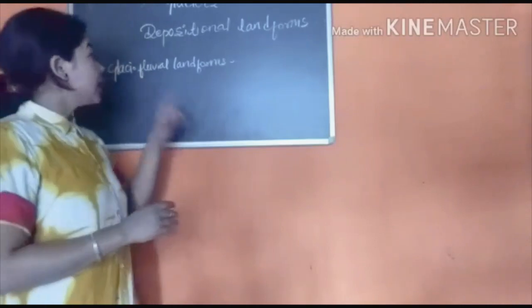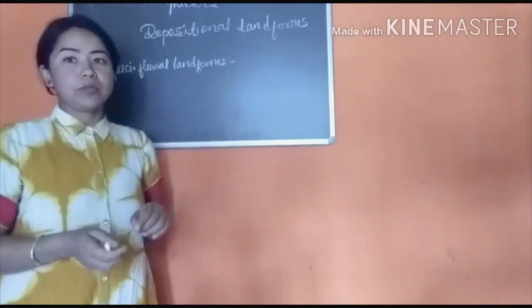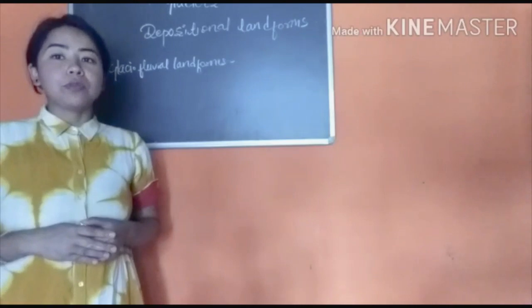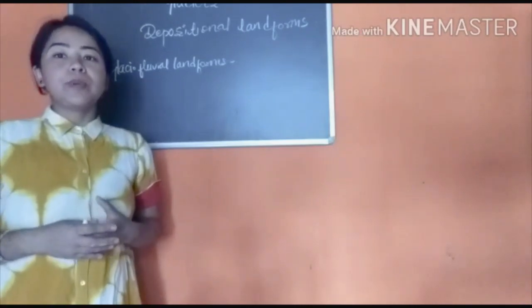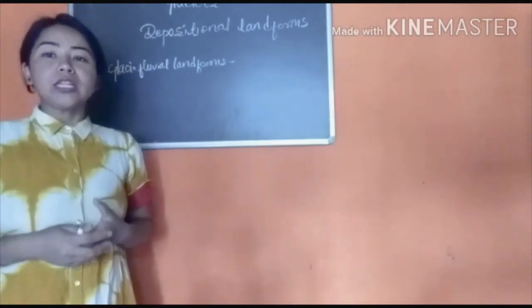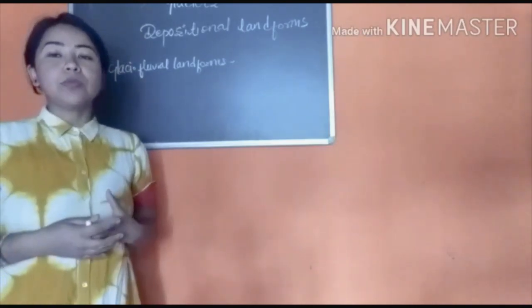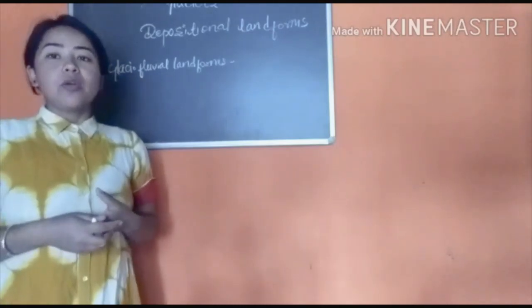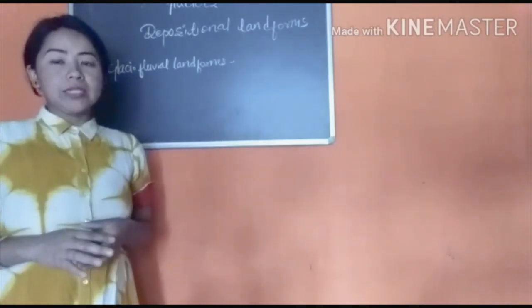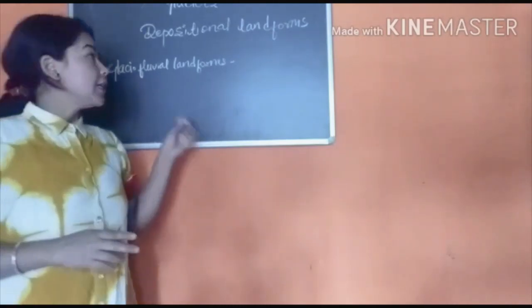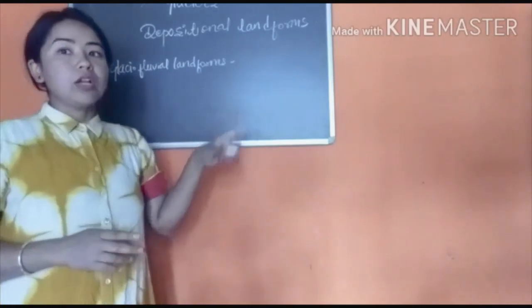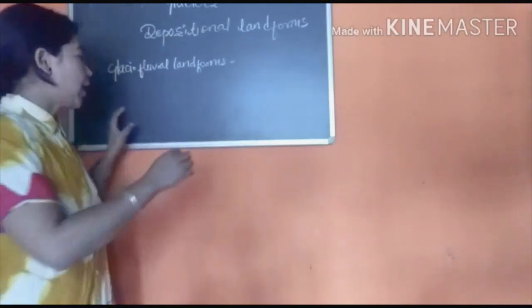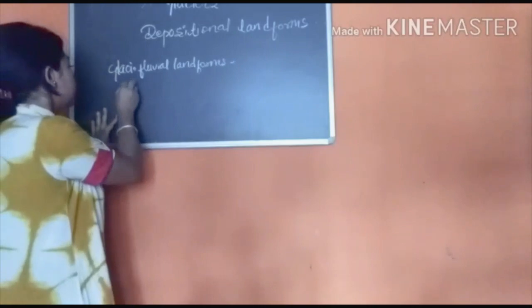Number two is glacial fluvial landforms. Glacial fluvial landforms are landforms formed by glaciers in the lowlands — the depositional landforms formed by glaciers as they advance towards the lowland. Under glacial fluvial landforms, number one is drumlins.